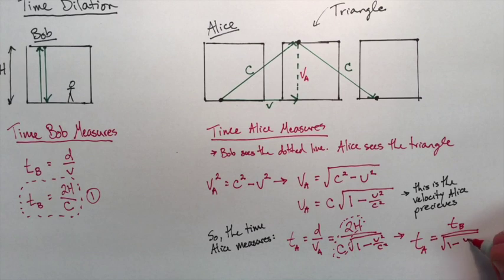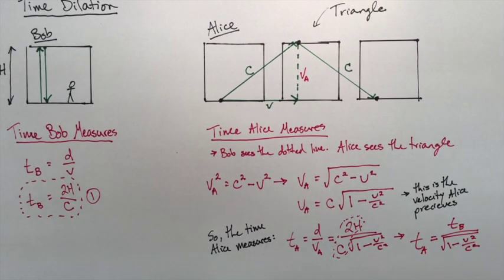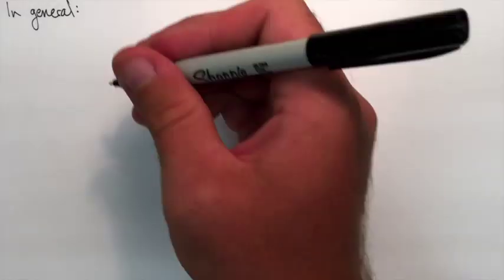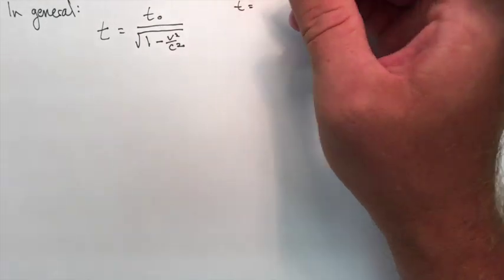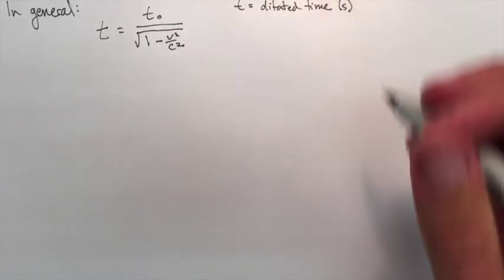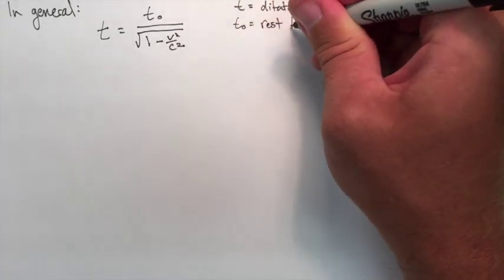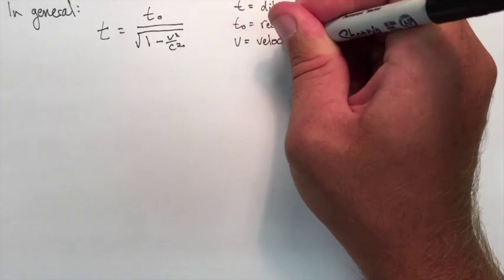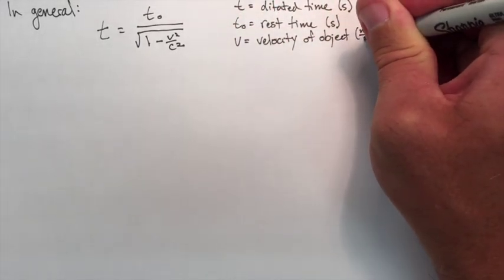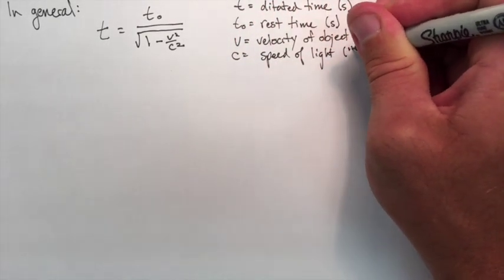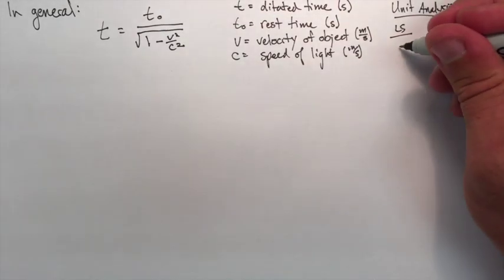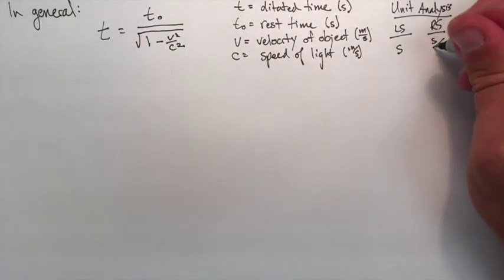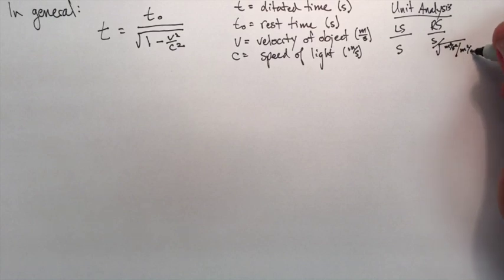So in general, now we have a formula where we can relate the two times. t is the dilated time, so that would be the time for something that's moving. t naught is the rest time, so that would be the time taken for an object if it was at rest. v is the velocity of the object in meters per second, and c is the speed of light in meters per second. If we check the unit analysis: on the left side, time is in seconds. In the right side, seconds over the root of meters per second squared, meters per second squared—all of that cancels out, so the seconds balance.